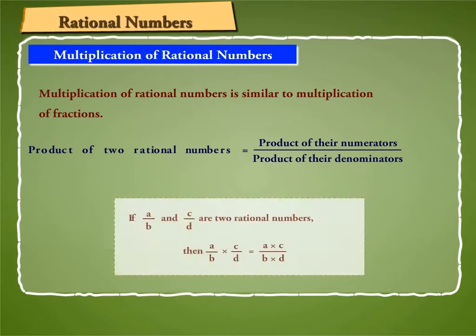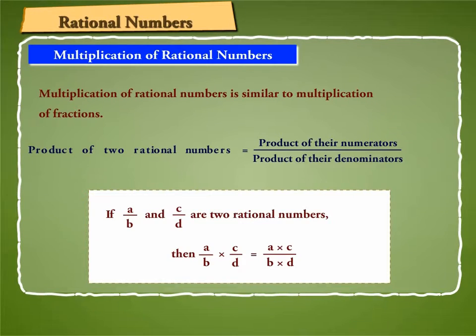Thus, if A by B and C by D are two rational numbers, then A by B into C by D is equal to A into C by B into D.